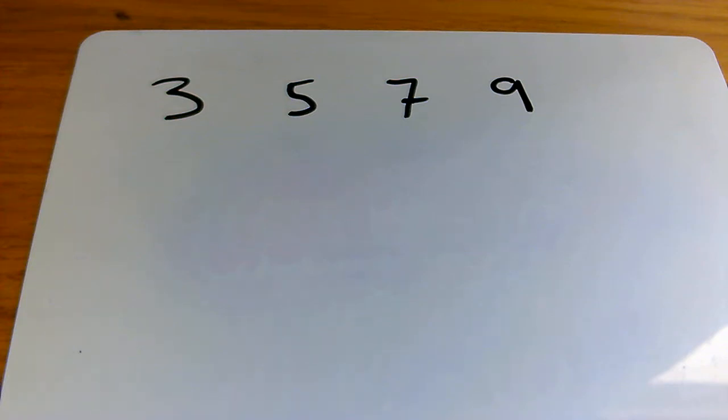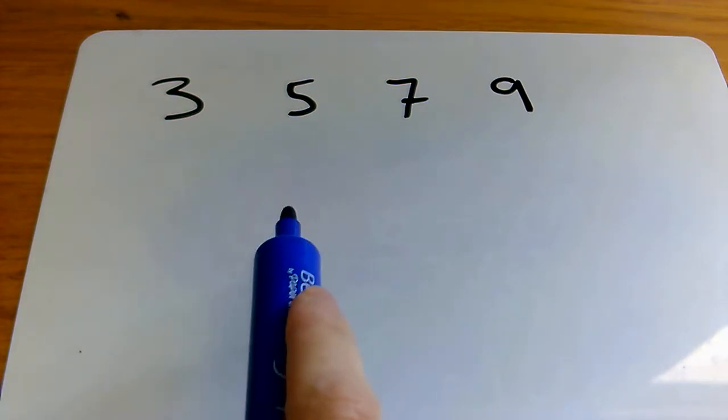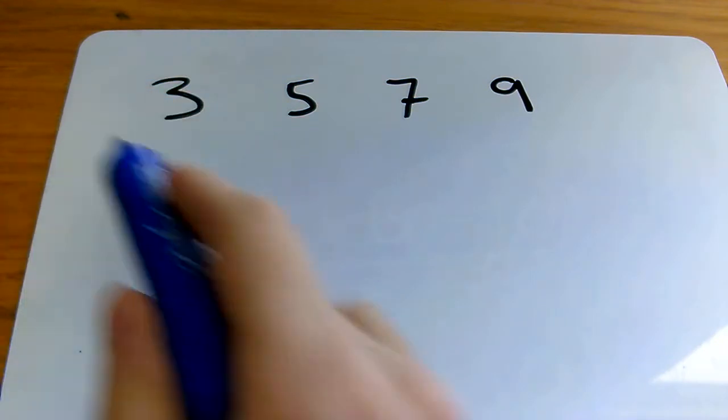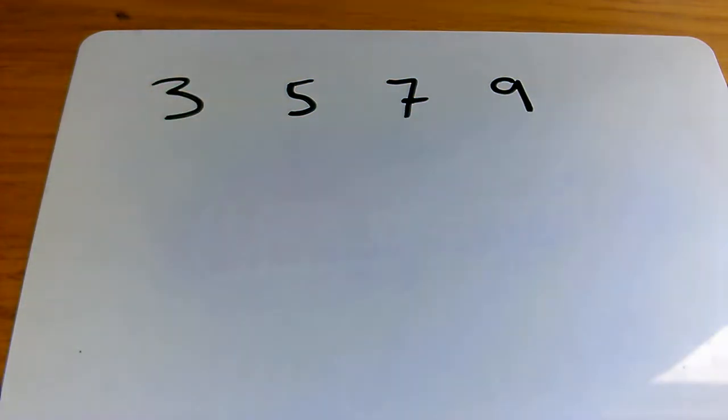Here we're going to go through some of the basic problems you can solve with sequences. This is quite a simple sequence: 3, 5, 7, 9, and you can probably already tell what the rule for this sequence is.